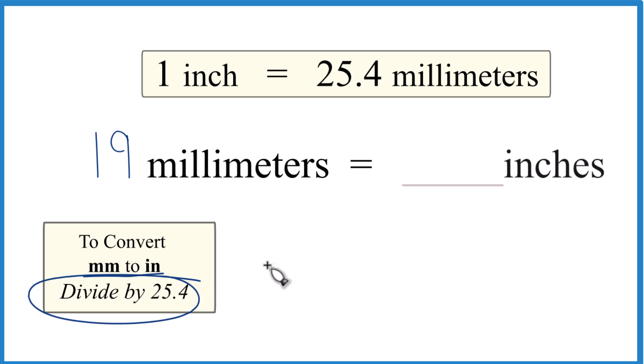Like this, and remember it's 25.4 millimeters per inch, so we can just put this over inches like that. That's our conversion factor. Millimeters on the top and bottom, they cancel out, so we get inches. We know we did it right.